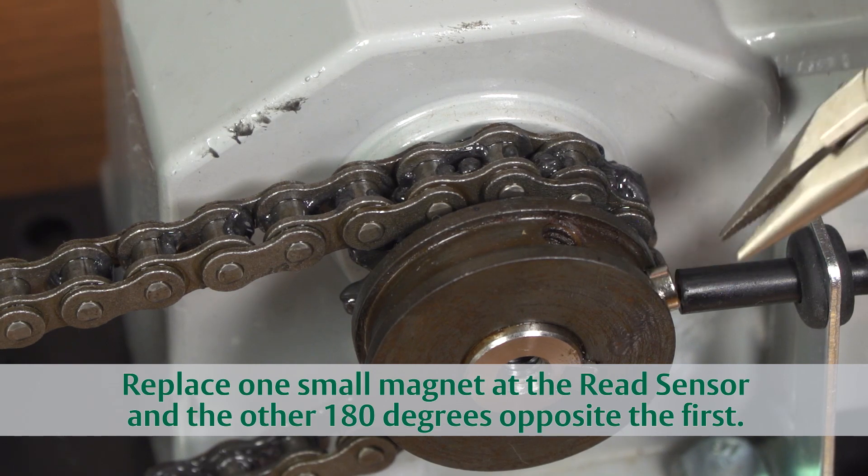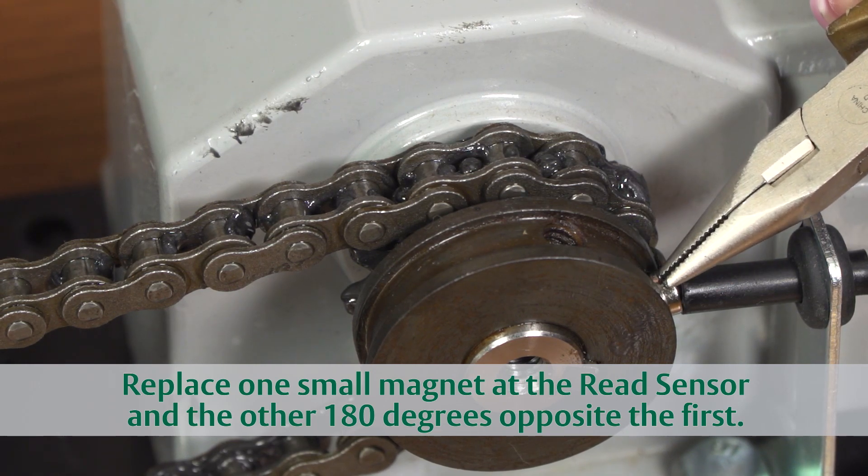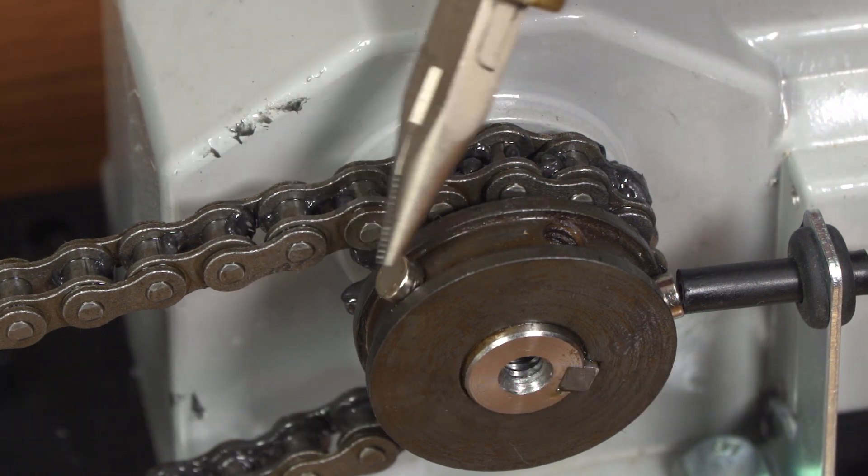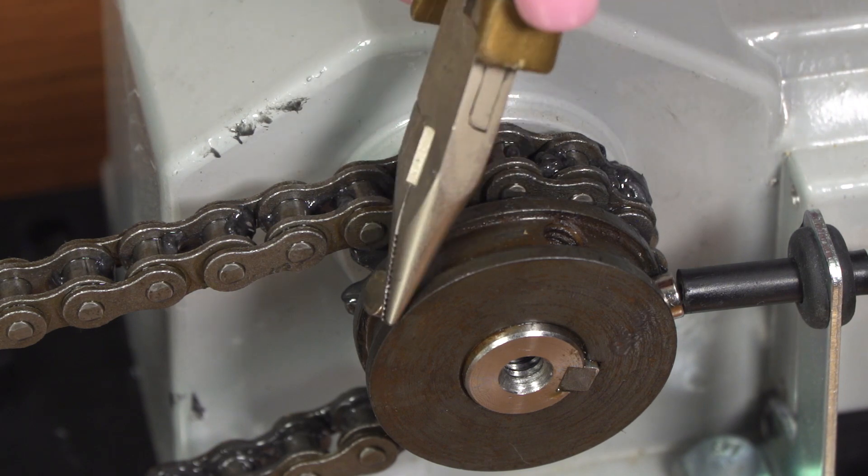Now, replace both magnets into the motor sprocket. Be sure one of the magnets lines up with the reed switch. This sets the closed position. The other open position magnet should be approximately 180 degrees from the first.